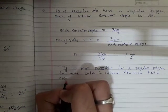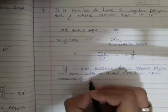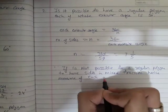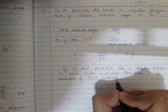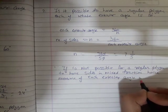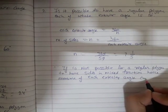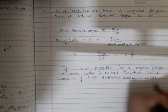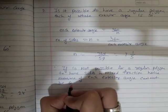Therefore, the measure of each exterior angle cannot be 50 degrees.